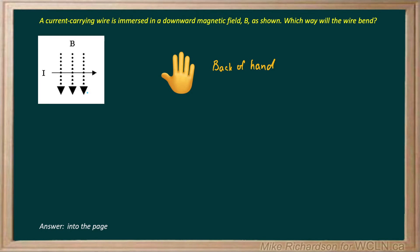A current-carrying wire is immersed in a downward magnetic field labeled by B as shown in our picture. So here we've got our magnetic field lines and they're pointed down. I'll put them in blue. So they're arrows pointed down.